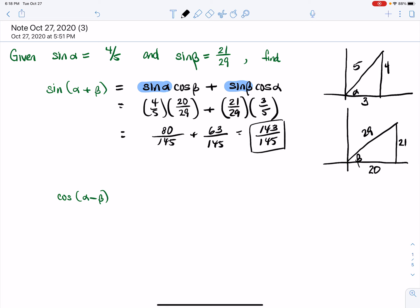Okay. So now applying the same idea to cosine of alpha minus beta, we use the identity for that, which is cosine alpha cosine beta plus sine alpha sine beta. And now we have all four pieces because we found them in the first part.